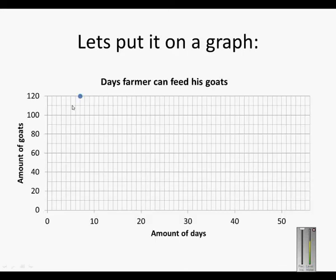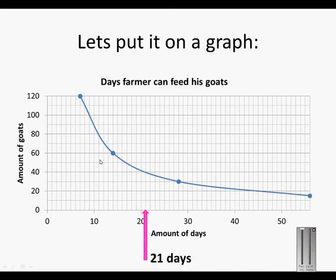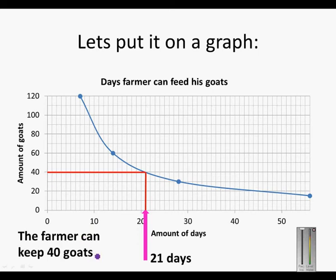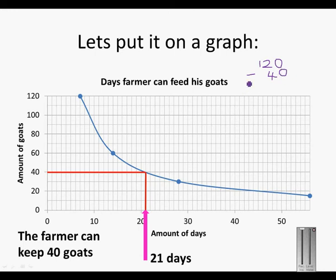Let's put it in a graph. So 21 days will be 40 goats. It means that the farmer can keep 40 goats. But remember, the question was not how many goats can he keep — the question was how many goats must he sell. So 120 minus 40 gives us 80. It means that the farmer has to sell 80 of his goats for the flock to be able to survive for 21 days.